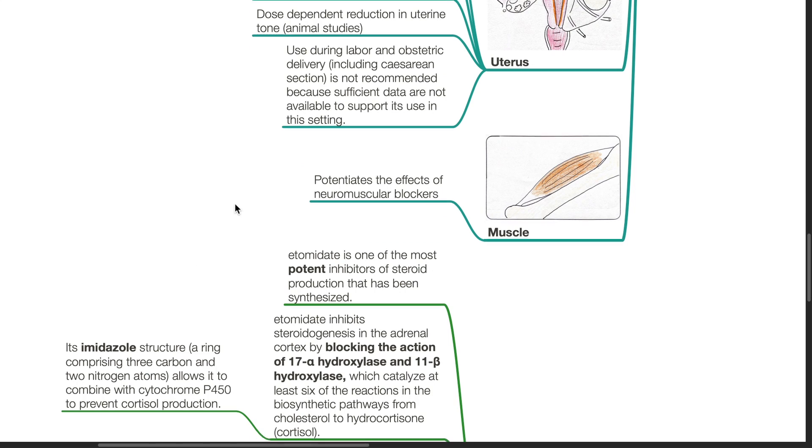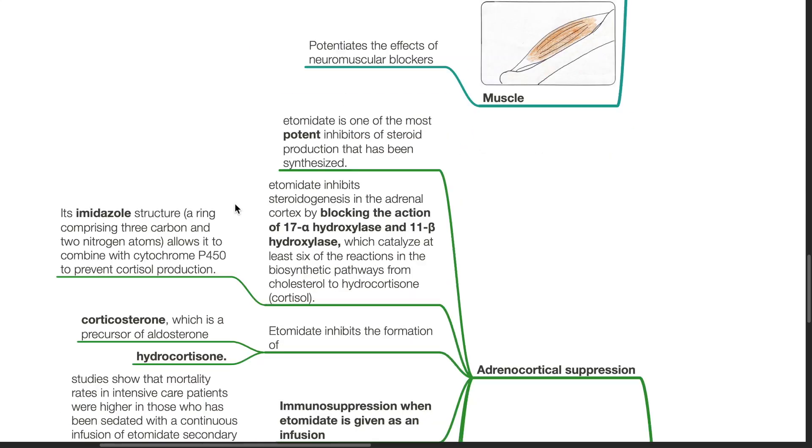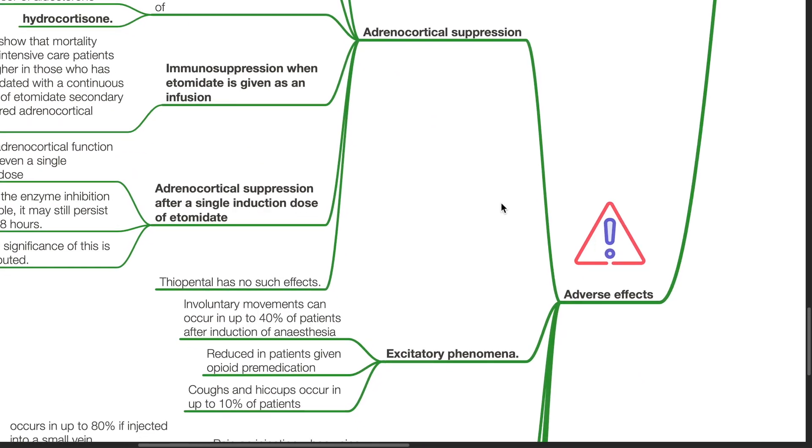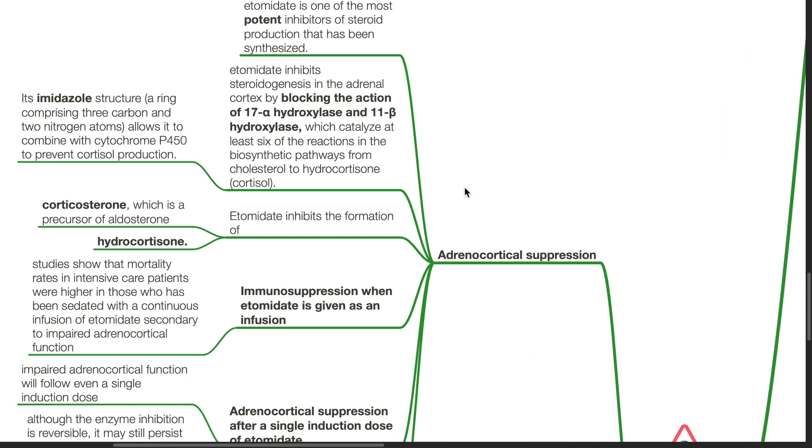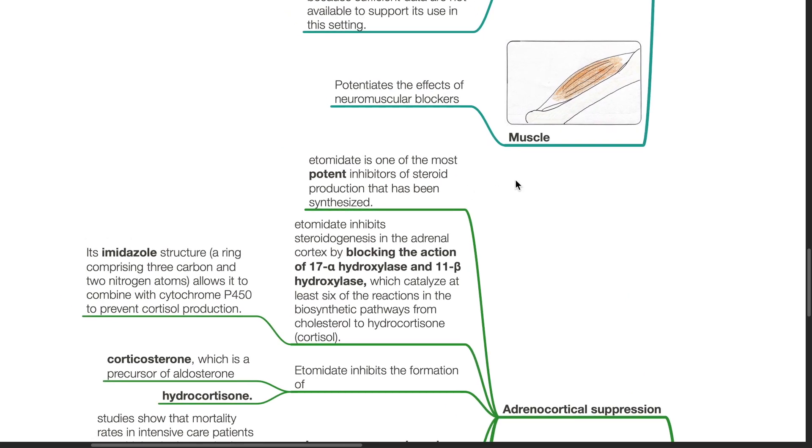Etomidate is one of the most potent inhibitors of steroid production that has been synthesized. It inhibits steroidogenesis in the adrenal cortex by blocking the action of 17-alpha-hydroxylase and 11-beta-hydroxylase, which catalyze at least 6 of the reactions in the biosynthetic pathways from cholesterol to hydrocortisol. Its imidazole structure, which is a ring comprising 3 carbon and 2 nitrogen atoms, allows it to combine with cytochrome P450 to prevent cortisol production.